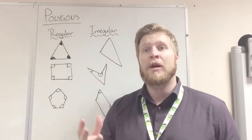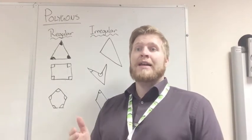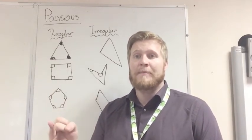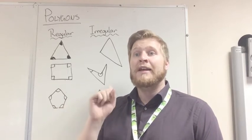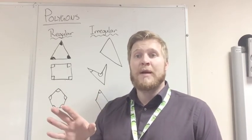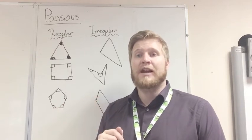So a polygon is a shape with straight sides, and a regular one has all sides the same and all angles the same. An irregular polygon is a 2D shape with straight sides, where the lengths of the sides might be different, or the angles on the inside might be different.